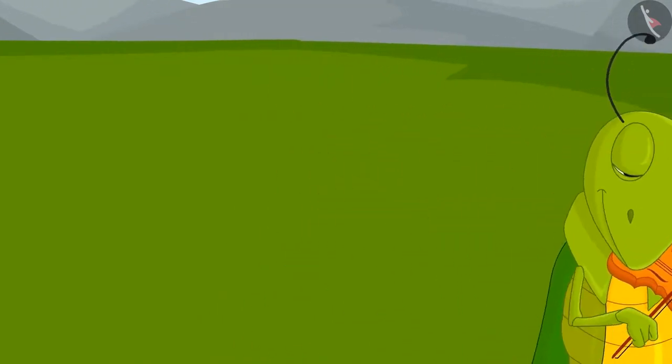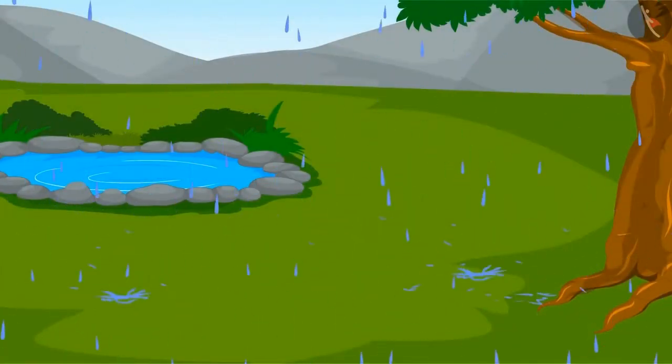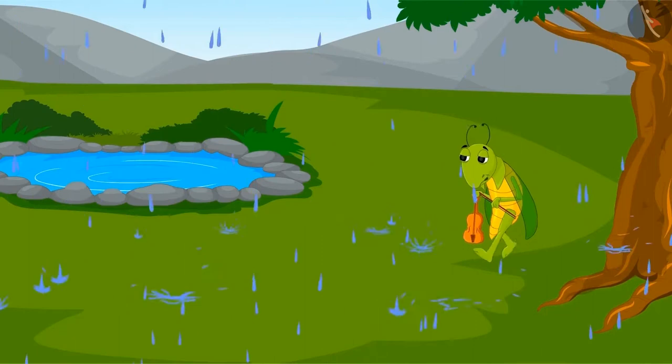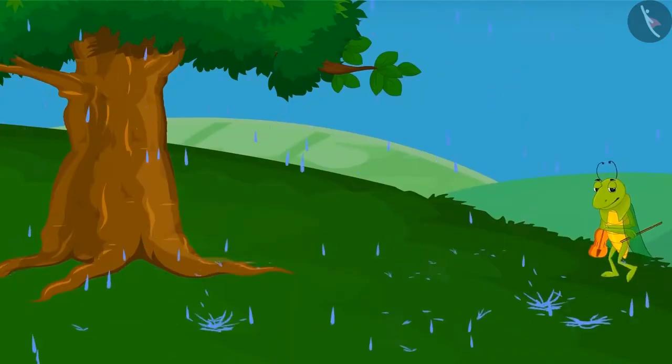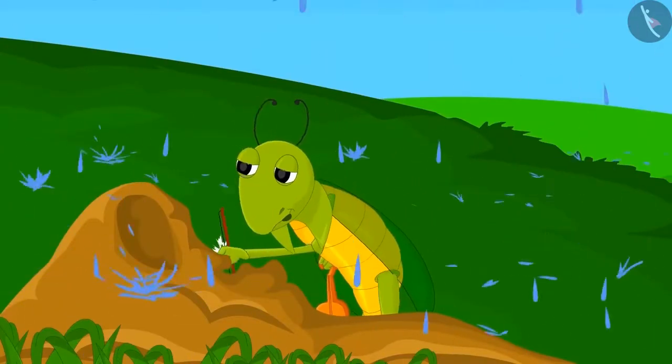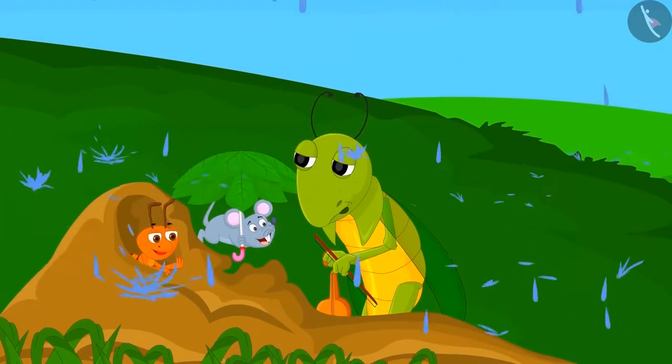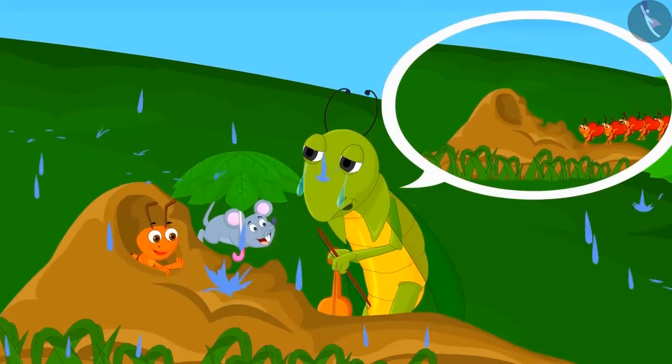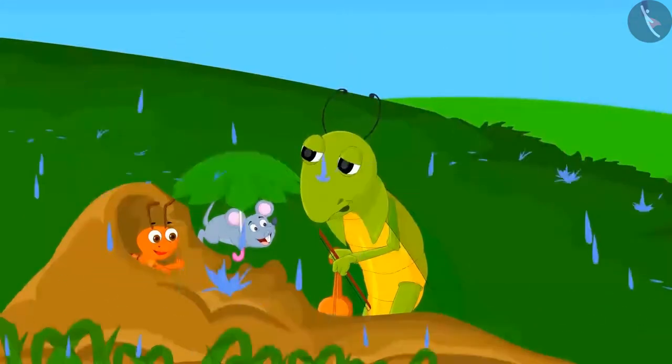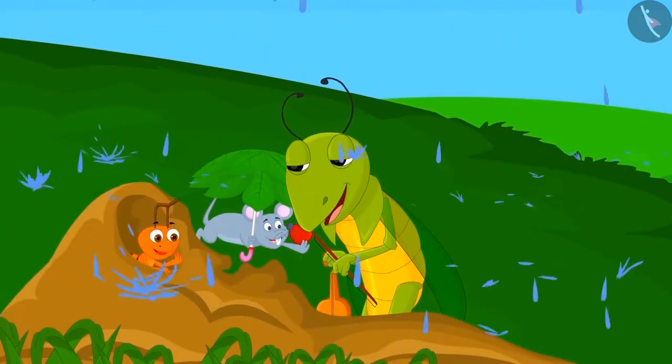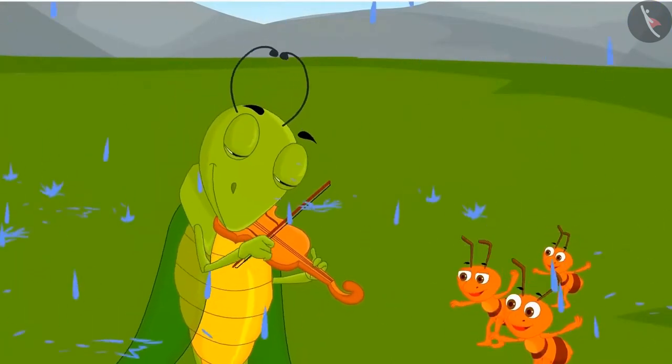Saying this, Tinku went away playing his violin. The next morning it started raining heavily. Tinku was very hungry and started wandering around in search of food. He then reached the house of the ants and mice. He apologized to the rat, saying that he had learned the lesson of his carelessness and he now knew that it is sensible to work hard. The rats gave him some food and everyone happily started enjoying the rainy season.